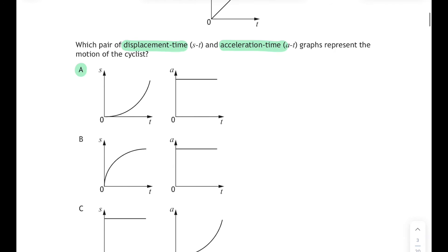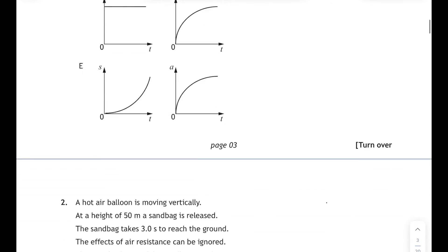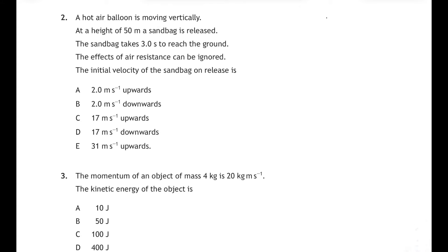Question two. A hot air balloon is moving vertically. At a height of 50 meters a sandbag is released and the sandbag takes three seconds to reach the ground. The effects of air resistance can be ignored and we've to determine the initial velocity of the sandbag on release. Well this is a SUVAT or a TUVAS question about equations of motion so I'm going to sketch what's going on here. There's my little sandbag falling vertically and let's write those five variables down.